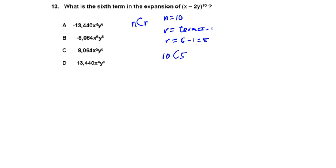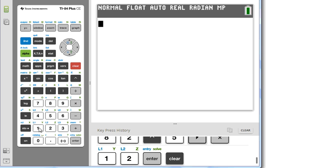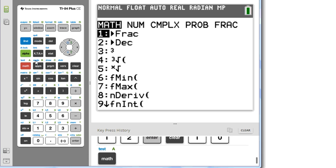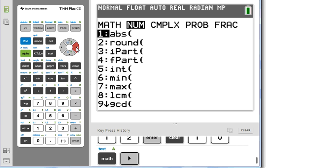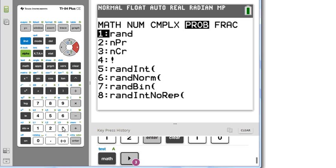And in the calculator, the first thing we'll put here is 10 for N, and then we go to math, probability 3.